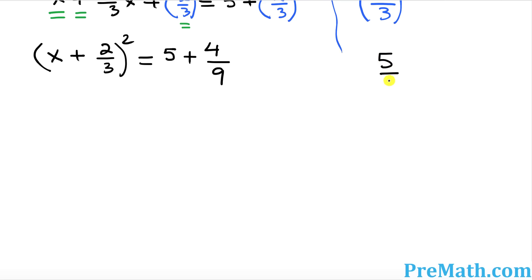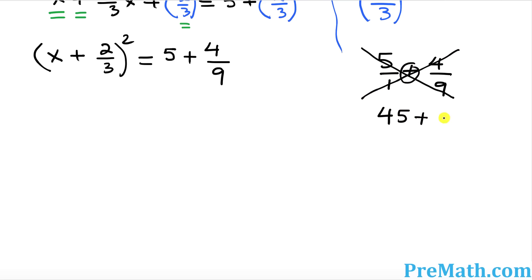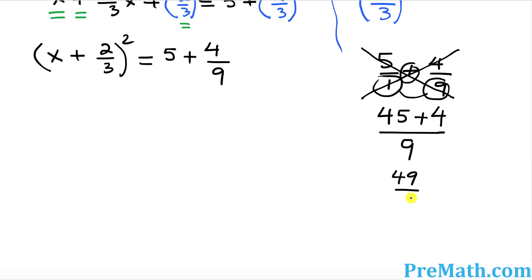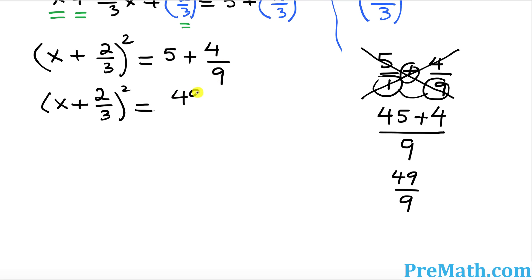To add 5 plus 4 over 9, write 5 as 5 over 1. Cross-multiplying: 5 times 9 is 45, plus 4 times 1 is 4, divided by 1 times 9 which is 9. So 45 plus 4 is 49 over 9. Therefore (x plus 2 over 3) squared equals 49 over 9.